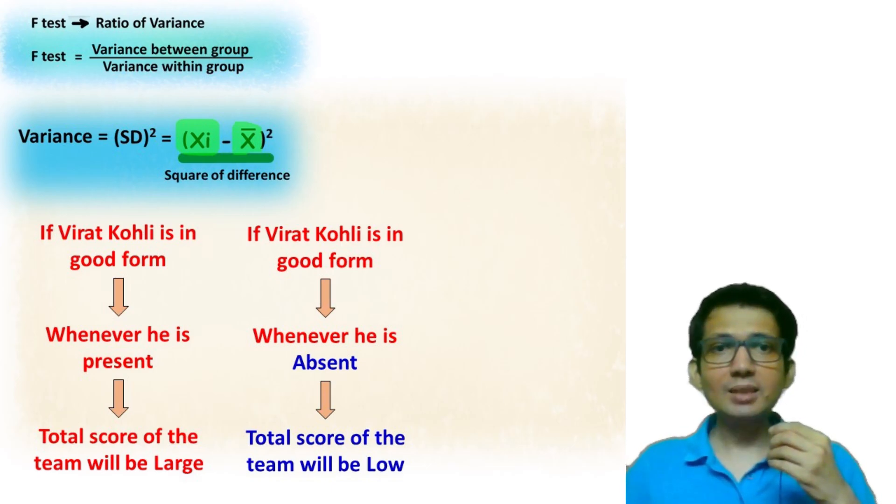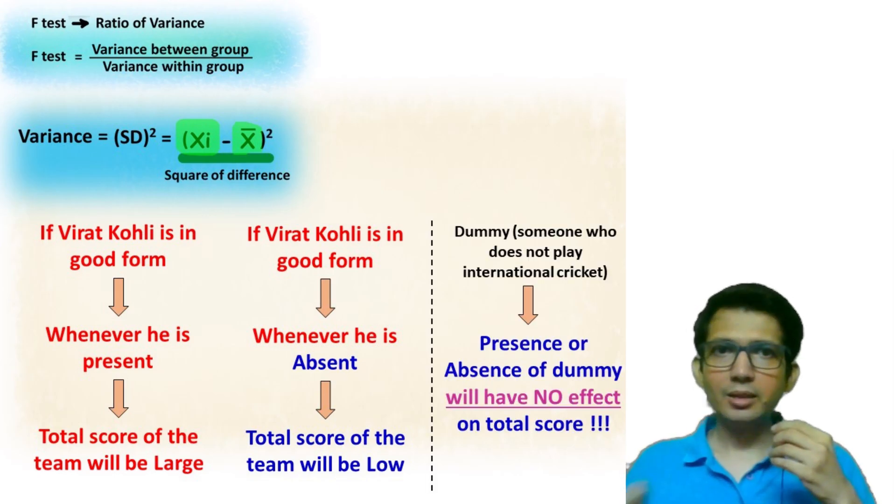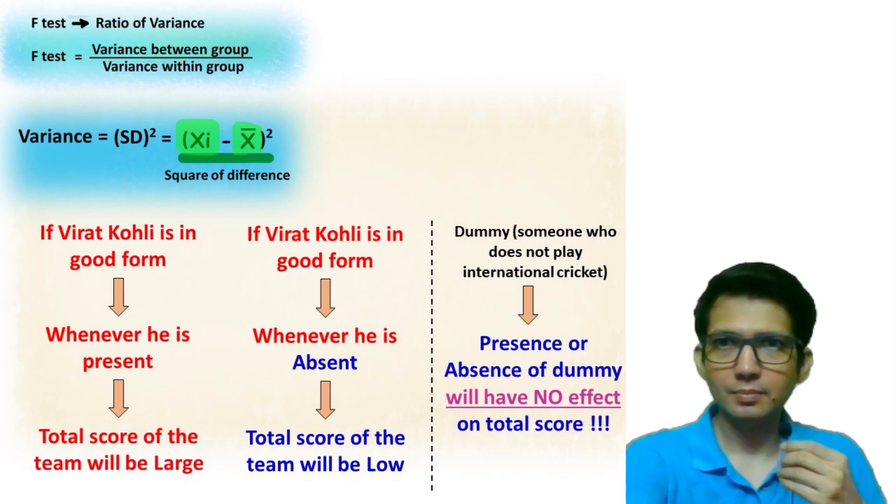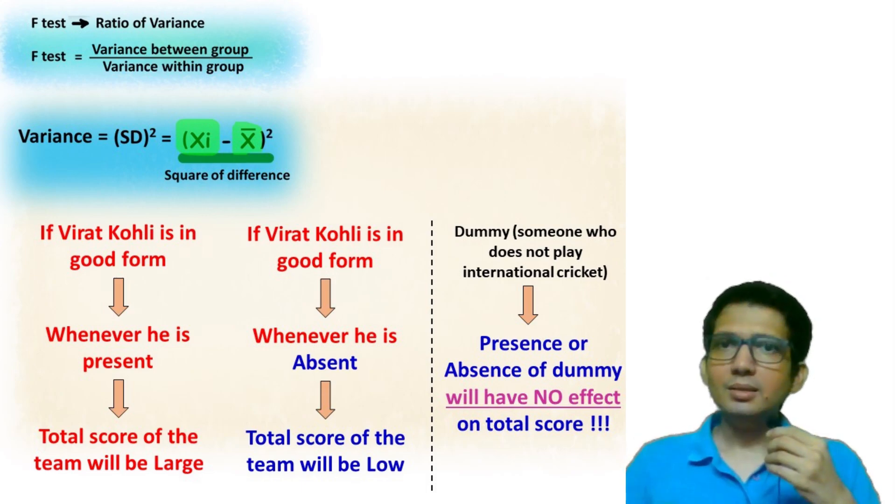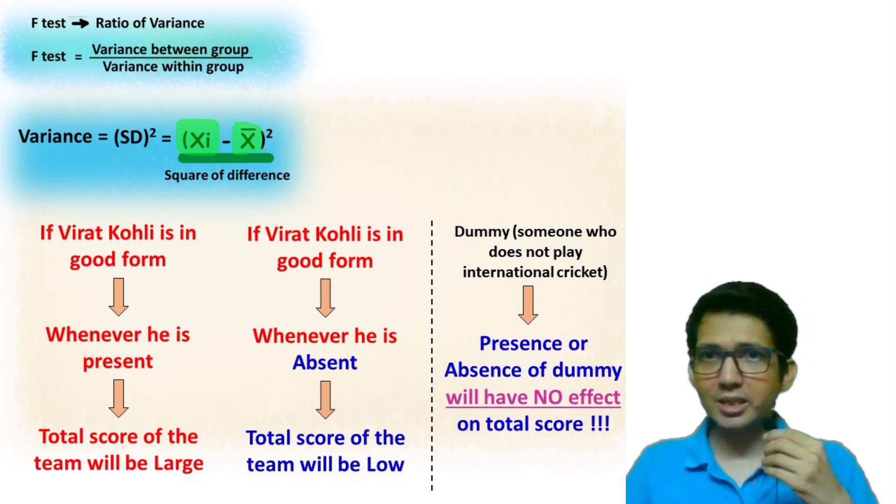Now the question is with whom do we compare this performance of this player. For this comparison, we have a dummy variable. The dummy variable is the one which is not going to contribute to the total score of the team. For example, someone like you and me who does not play international cricket can be taken as a dummy variable.